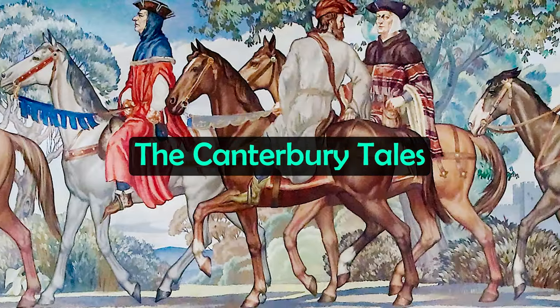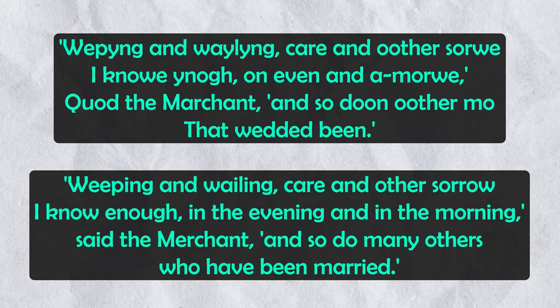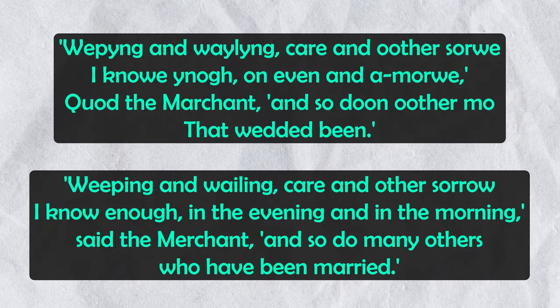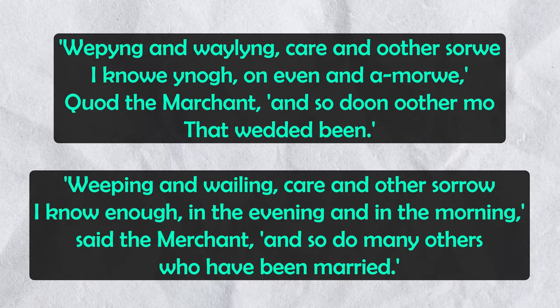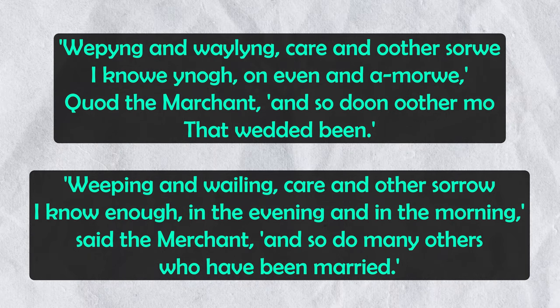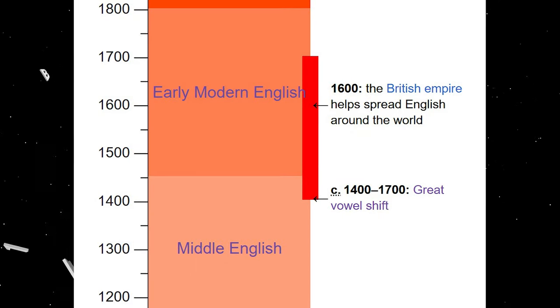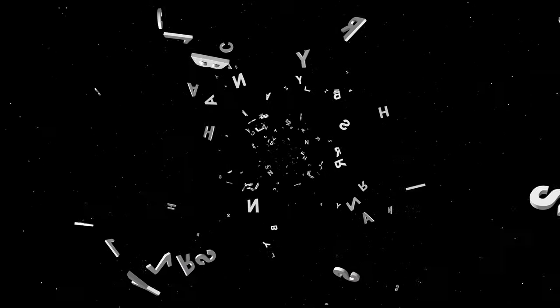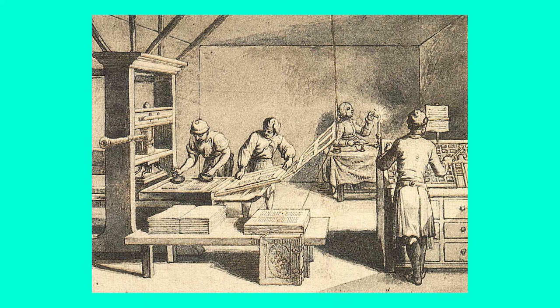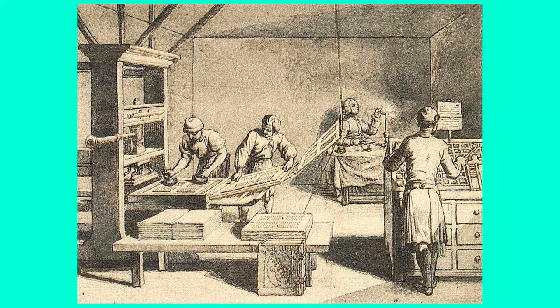One of the most notable works of Middle English was The Canterbury Tales, written by Geoffrey Chaucer — a collection of 24 stories written between 1387 and 1400 — which helped to standardise the London dialect of Middle English. A side-by-side comparison of Middle English and Modern English shows it is much more intelligible compared to Old English. Shortly after The Canterbury Tales, the English language went through a major transition known as the Great Vowel Shift, which took place gradually between around 1400 and 1700, involving changes in the pronunciation of all Middle English long vowels. Some consonants also changed, particularly those that became silent. It was through this period that Middle English evolved into Early Modern English, with the invention of the printing press in the 15th century also helping to standardise English spelling and grammar.